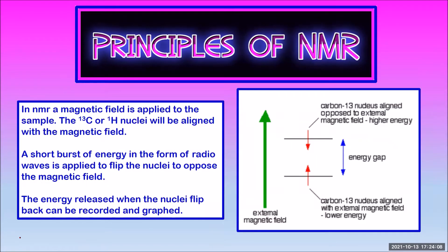Energy in the form of radio waves can make these tiny magnetic nuclei flip to align against the field — this is a higher energy state. Once that energy is removed, the nuclei will flip back and give off the extra energy they had absorbed. In nuclear magnetic resonance spectroscopy, a magnetic field is applied to the sample. The nuclei align with the magnetic field, then a very short burst of radio waves is applied to flip the nuclei to oppose the magnetic field. The energy released when the nuclei flip back can be recorded and graphed.